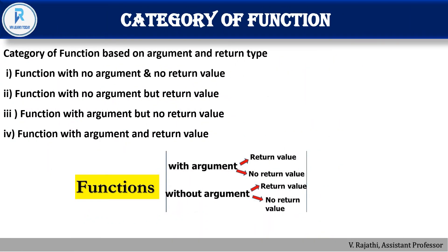Let's summarize from the beginning. We discussed what a function is, the purpose of functions, function aspects — declaration, definition, call — formal and actual arguments, and how to pass arguments using call by value and call by reference. Finally, let's look at the categories of functions: function with no argument and no return value, function with no argument but return value, function with argument but no return value, and function with argument and return value.